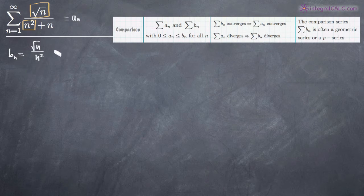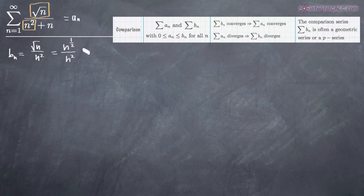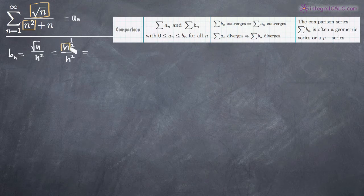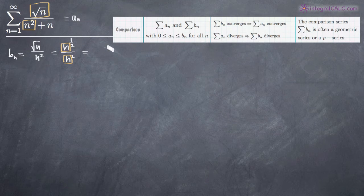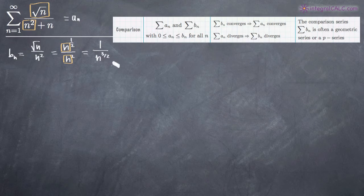We can simplify b sub n. The square root of n is equal to n to the one-half power. We'll leave n squared alone. Now we can simplify this fraction — we take one-half minus two because both share the base n, so we subtract the exponents. We do the exponent in the numerator minus the exponent in the denominator: one-half minus two. That leaves us with n to the three-halves in the denominator. So our simplified comparison series b sub n is 1 over n to the three-halves.